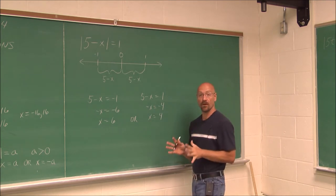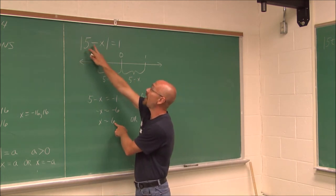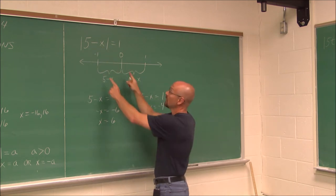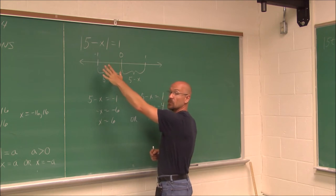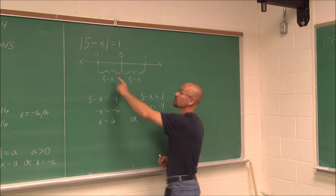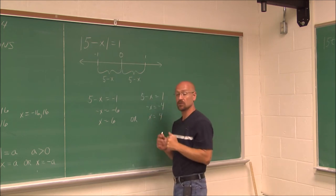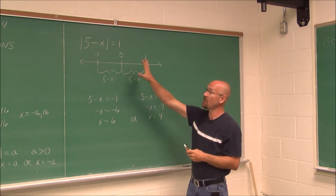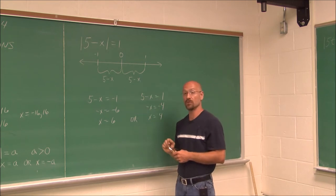Now we want to check our answers. Substituting x equals 6: 5 minus 6 is negative 1, and the absolute value of negative 1 is 1 — a true statement. Checking x equals 4: 5 minus 4 is 1, and the absolute value of 1 is 1 — also a true statement. So when we have absolute value equations, we write two equations, solve them, and check both solutions.